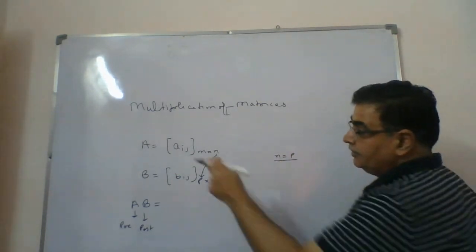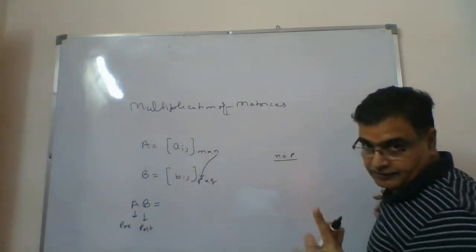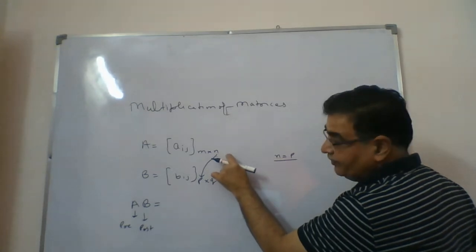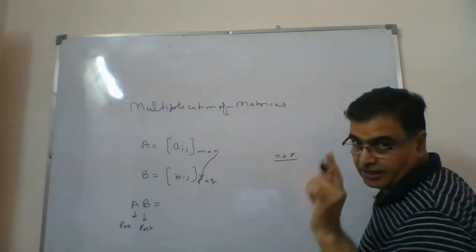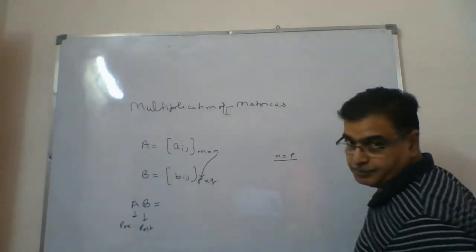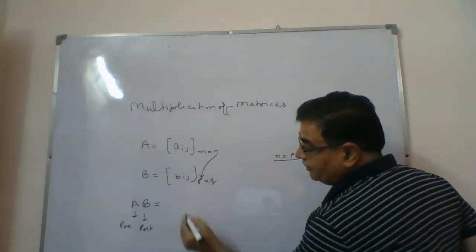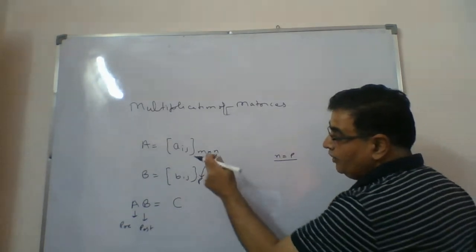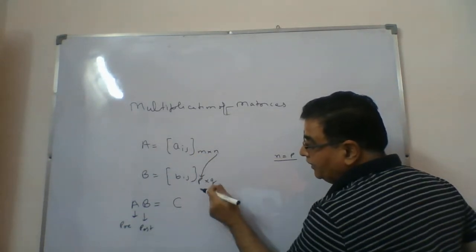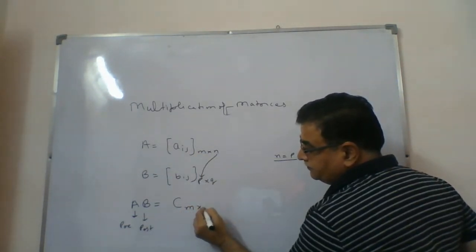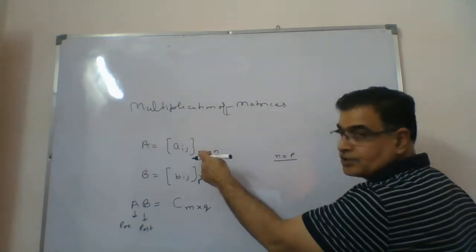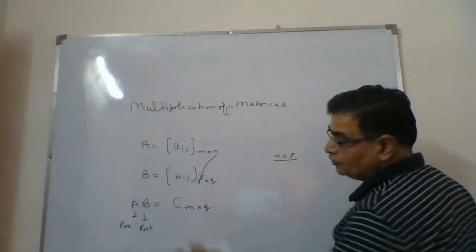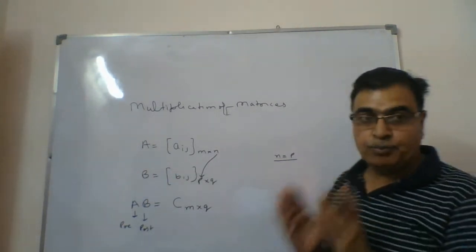So one thing is clear: the multiplication of two matrices is only possible when the number of columns in the first matrix is the same as the number of rows in matrix B. In that case, the new matrix C that you get will have order m×q — rows coming from the pre-multiplier and columns coming from B.